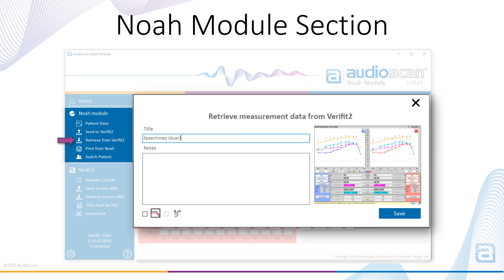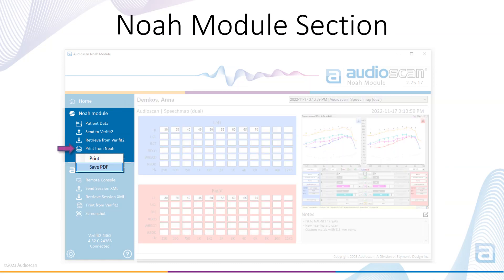Select Retrieve from Verifit 2 to pull measurement results, audiogram data, and RECD data into the AudioScan NOAA module. Selecting Print from NOAA enables you to print an AudioScan NOAA module generated report. This will include any audiometric data and measured result data associated with the selected patient. A hard copy or PDF can be printed.